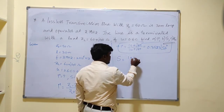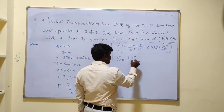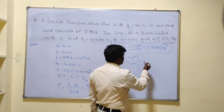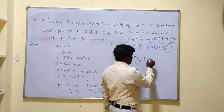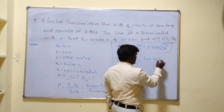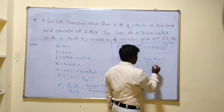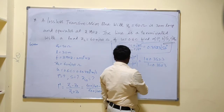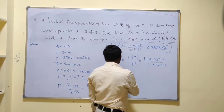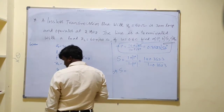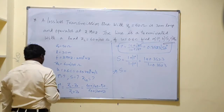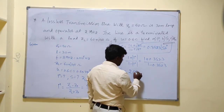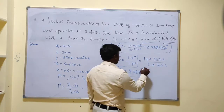Next, calculate the standing wave ratio: S equals (1 plus |gamma|) divided by (1 minus |gamma|). So it is (1 + 0.3523) divided by (1 − 0.3523). After simplification, the value of S is 2.088. Note there are no units for gamma and S.